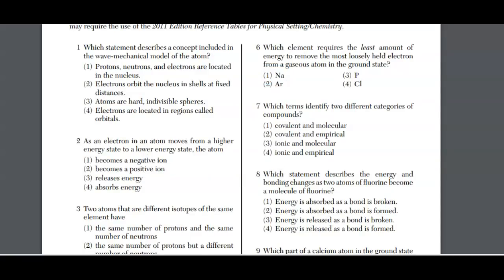Looking at question seven, identify two different categories of compounds. When you have metal, non-metal, you have ionic bonds or ionic compounds, better known as salts. When you have non-metal, non-metal bonds, you have molecules. The answer here is choice three.